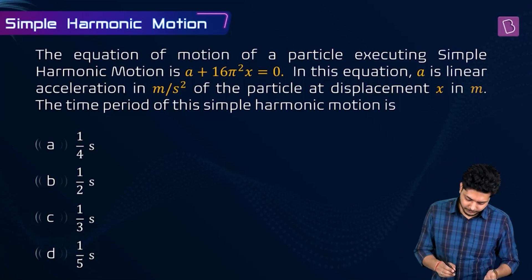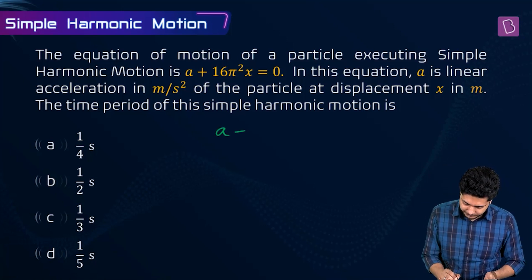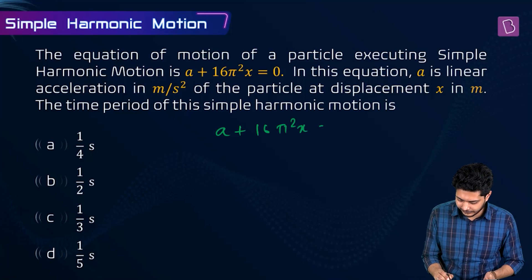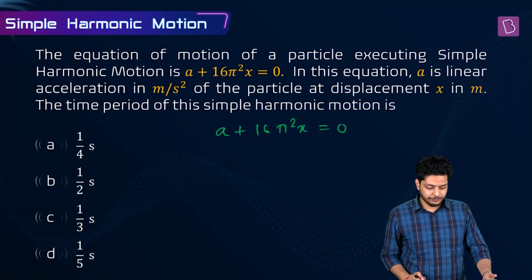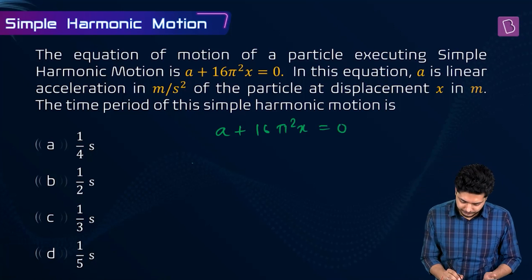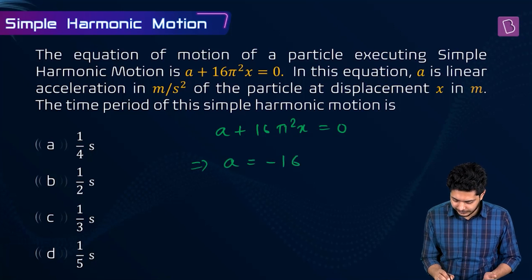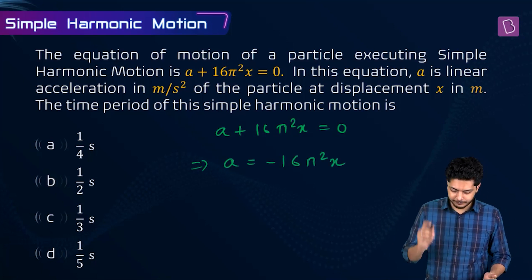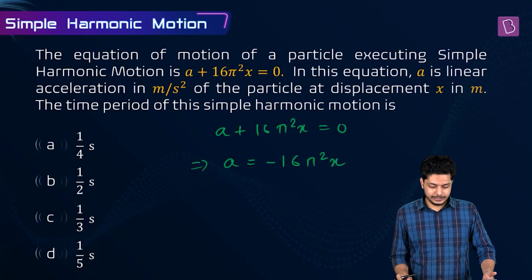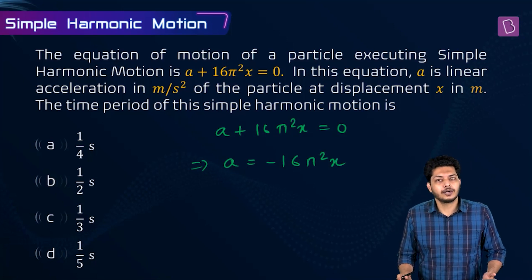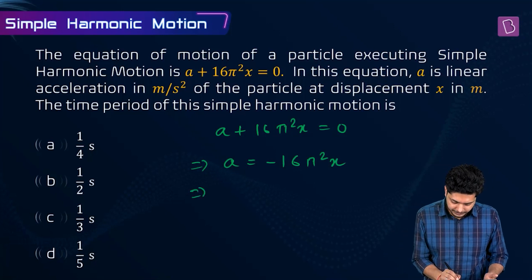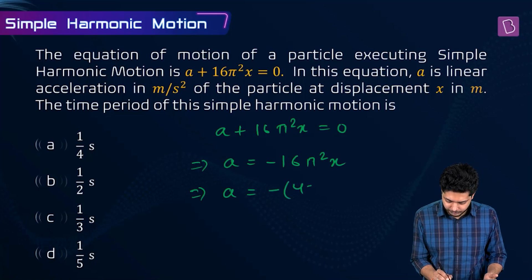Let me write the equation: a plus 16π²x equals 0. Rearranging, a equals minus 16π²x. Since 16 is 4 squared, we can write this as a equals minus (4π)²x.